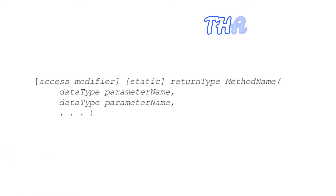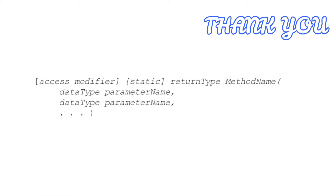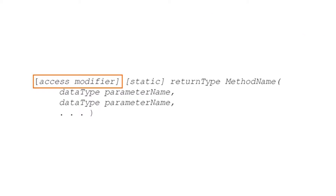Here's an explanation of the syntax for a method header. This first piece, called the access modifier, tells us who can call the method. If we make this method public, then anyone can call it, and if we make it private, then only other methods within this object can call it. The square brackets mean that the access modifier is optional, and if we don't provide it, the default is private.